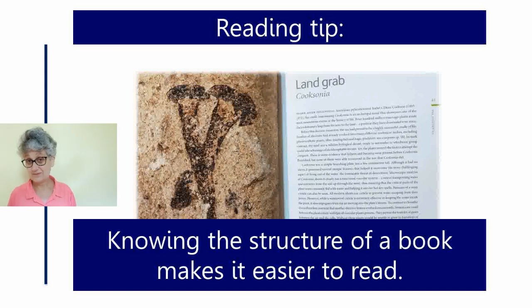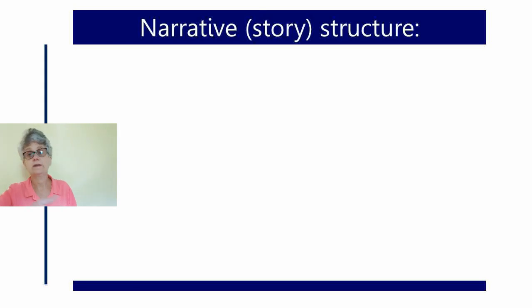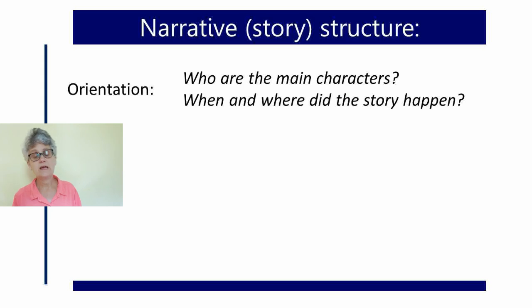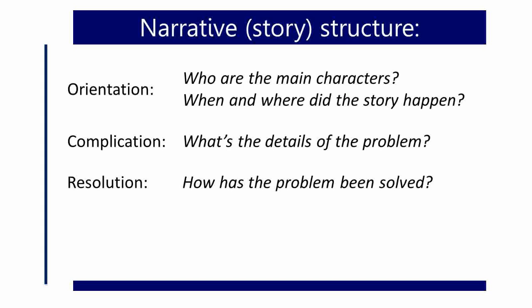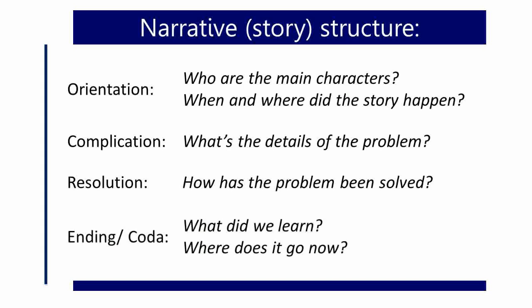When I say narrative structure, story structure, I'm talking about what you probably learned in school. Something where the author gives the reader an orientation to the characters involved, to the scene involved, and to where this all took place. Then the author leads the reader into a complication — there's a problem, something that needs to be solved. Then the author gives the reader a resolution, where the characters did something to solve the problem. And in a narrative, authors often end it with some sort of coda about what we learned or where we go from here.